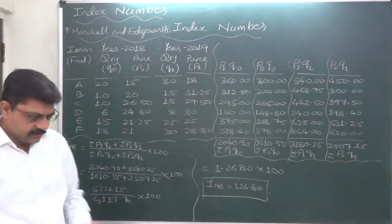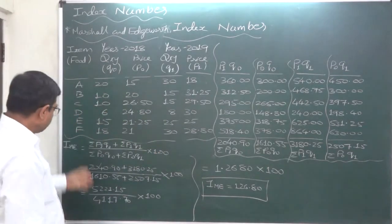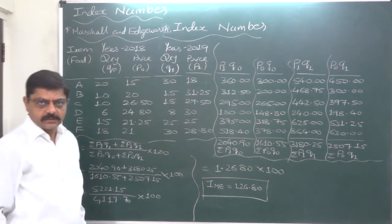So ultimately index number of Marshall and Hoverty comes to 126.80. So in this way, we learnt how to find index number of Marshall and Hoverty.